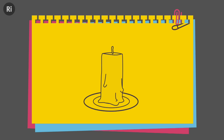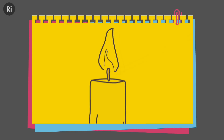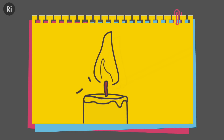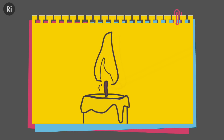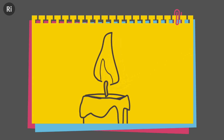Candles are made of wax. When you light the wick, the heat melts the wax and turns it into a liquid. This liquid is drawn up through the wick. As it travels up the wick, the liquid gets hotter and evaporates. It turns into a gas. The gas mixes with the oxygen in the air and catches fire from the original flame.